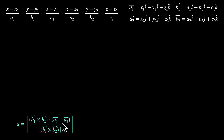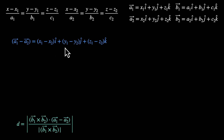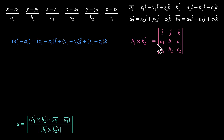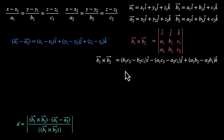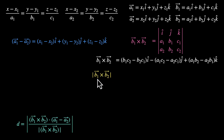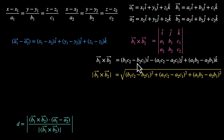Now let's use the formula. A1 minus A2 is (x1−x2)î + (y1−y2)ĵ + (z1−z2)k̂. Then we need B1 cross B2, which is the determinant with rows (î, ĵ, k̂), (a1, b1, c1), (a2, b2, c2). Expanding: î(b1·c2 − b2·c1) − ĵ(a1·c2 − a2·c1) + k̂(a1·b2 − a2·b1). We also need the magnitude of B1 cross B2, which is the square root of the sum of the squares of those three components.